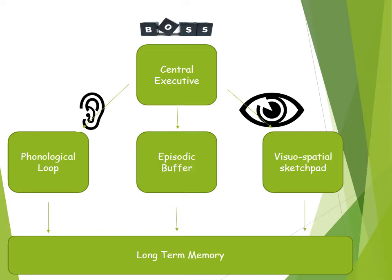The phonological loop deals with spoken and written material. It is made up of two sub-parts: the phonological store, which holds words that have been heard — like an inner ear — and holds information in a speech-based form. We also have the articulatory control process, which acts like an inner voice, rehearsing information that we have heard. The capacity is about two seconds of what you can say, so it is very limited in its capacity.